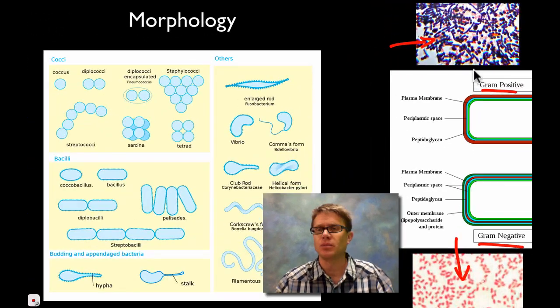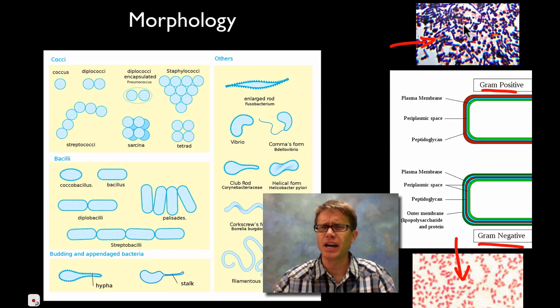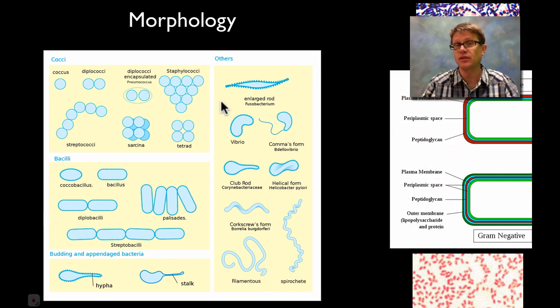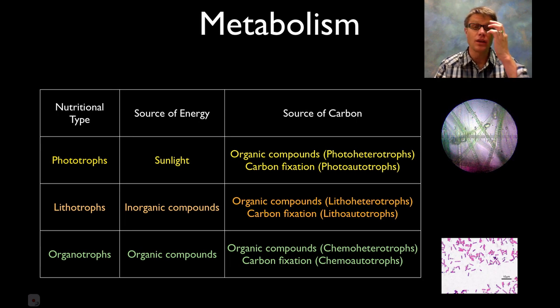And so you can classify bacteria by calling it like a gram positive staphylococci. But there's going to be hundreds of different varieties of that. And each of those are going to have different metabolism. And so what do they eat? How do they make a living? Well they pretty much do it in every way possible.